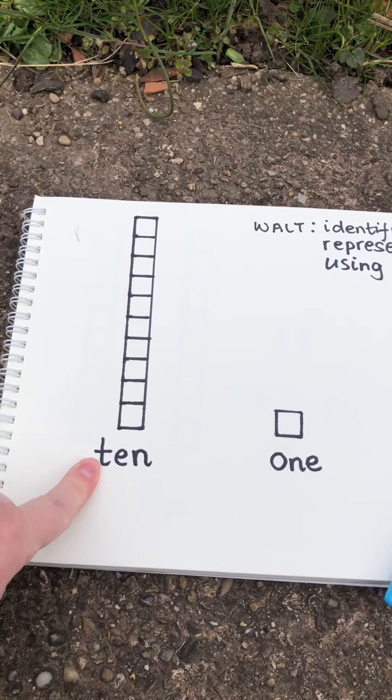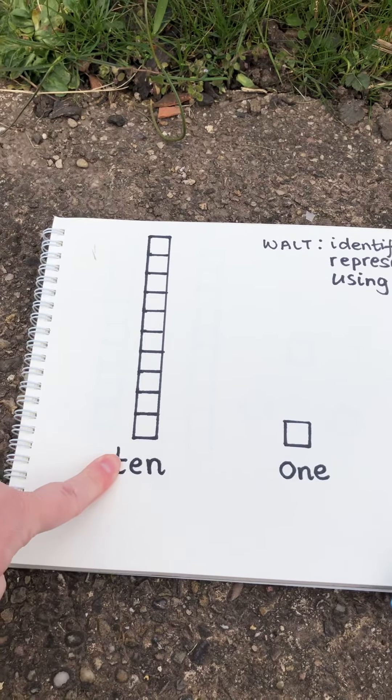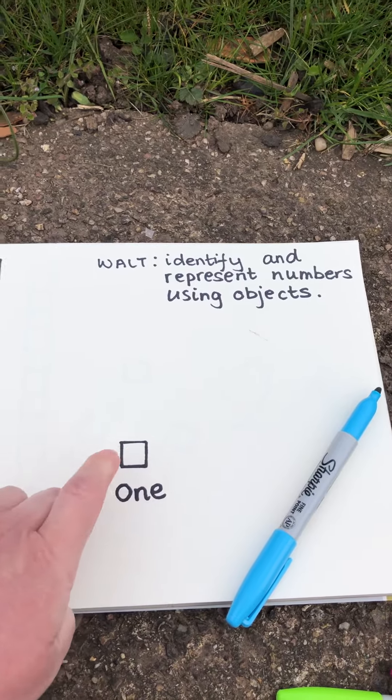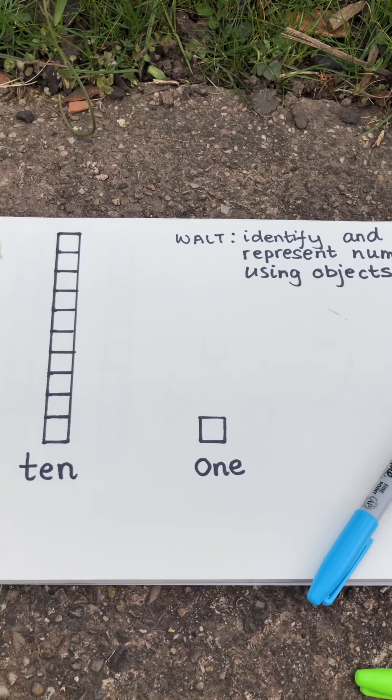So when we see this, we know straight away that there are 10 in this rod. This is called a 1 because there is just 1 square. So you might see lots of these separately, but each 1 is worth 1.